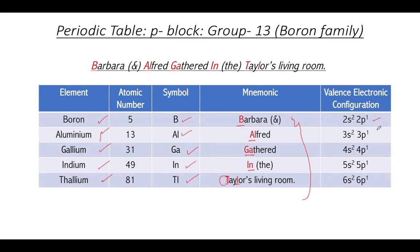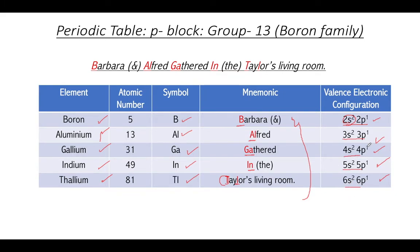The valence electron configurations go: 2s²2p¹ for boron, 3s²3p¹ for aluminium, 4s²4p¹ for gallium, 5s²5p¹ for indium, and 6s²6p¹ for thallium. The second shell is the valence shell for boron, third for aluminium, fourth for gallium, fifth for indium, and sixth for thallium. They are p-block elements because the last electron enters the p subshell in each case — the filling order goes 1s, 2s, then 2p.